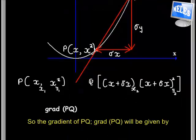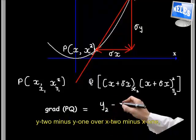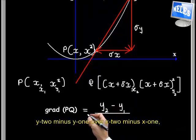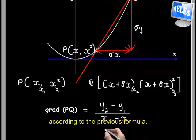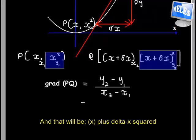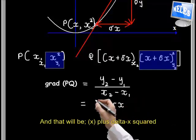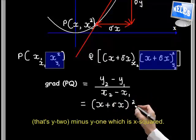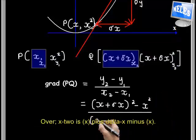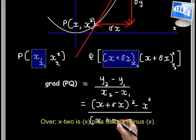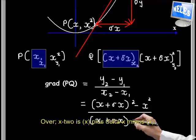So the gradient of PQ, grad PQ, will be given by y2 minus y1 over x2 minus x1 according to the previous formula. And that will be x plus delta x squared, that's y2, minus y1 which is x squared, over x2 is x plus delta x minus x1.